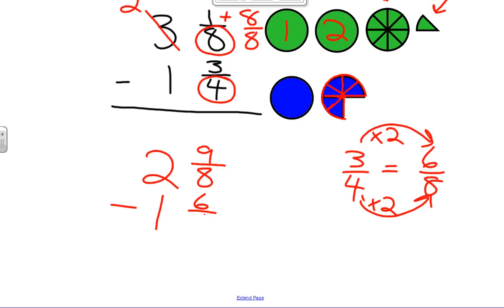Which means that 3 fourths would be equal to 6 eighths. So I'll just write that as 6 eighths. Now we can subtract 9 minus 6, the numerators, over 8, and 2 minus 1 is 1. To simplify, we're left with 1 whole and 3 eighths.